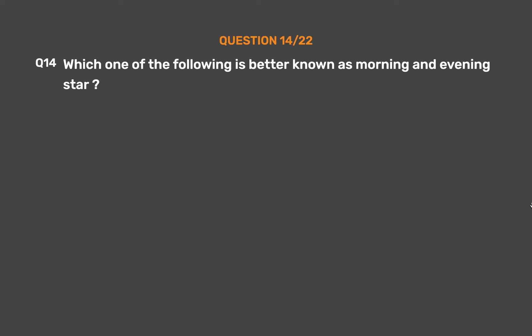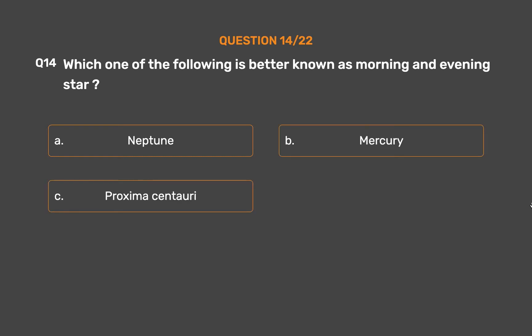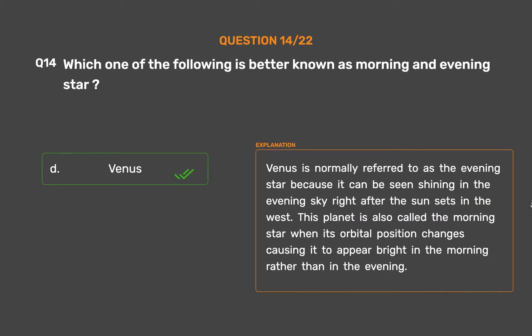Question number 14. Which one of the following is better known as morning and evening star? Option A: Neptune. Option B: Mercury. Option C: Proxima Centauri. Option D: Venus. The correct answer is Option D: Venus. Venus is normally referred to as the evening star because it can be seen shining in the evening sky right after the sun sets in the west. This planet is also called the morning star when its orbital position changes, causing it to appear bright in the morning rather than in the evening.